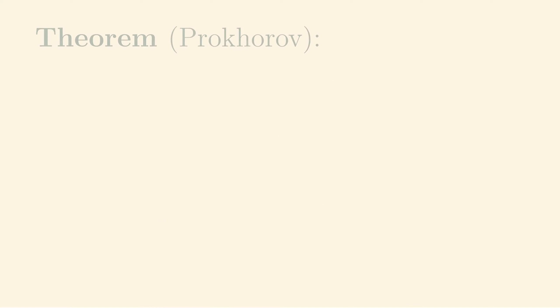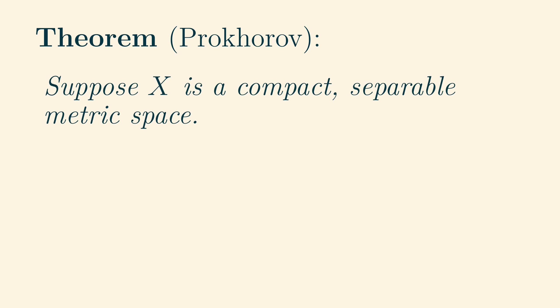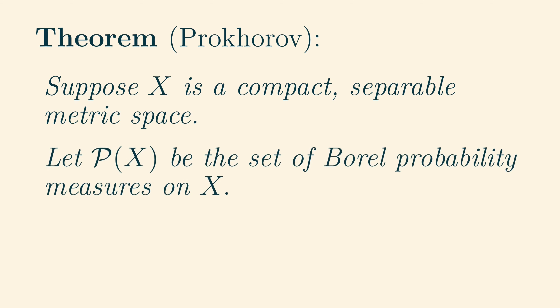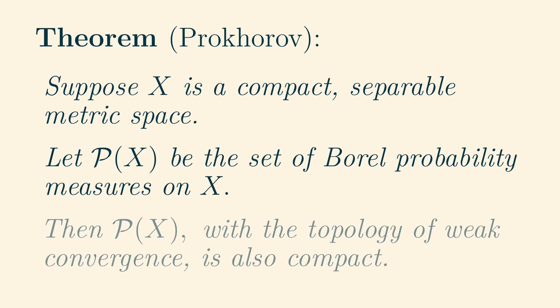Now, we won't define what weak convergence is in its full generality, but we will state a theorem about it due to Prokhorov. Suppose X is a compact, separable metric space. Let P(X) be the set of all Borel probability measures on X. Then P(X), with the topology of weak convergence, is also compact.